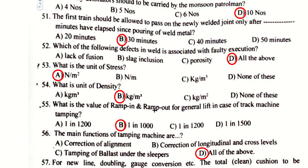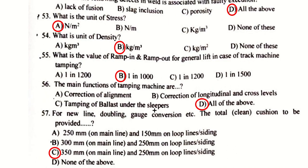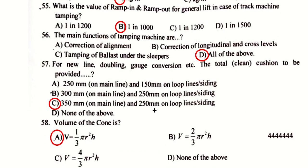The unit of stress is Newton per meter square. The unit of density is kilogram per cubic meter. The value of ramp-in and ramp-out for general lift in case of track machine tamping is 1 in 1000. The main functions of tamping machines are correction of alignment, correction of longitudinal and cross level, and tamping of ballast under the sleeper — so D (all of the above) is correct.